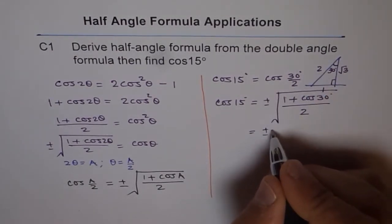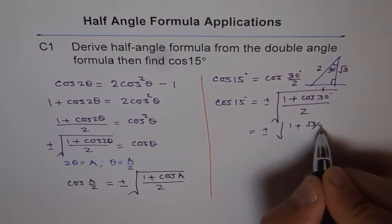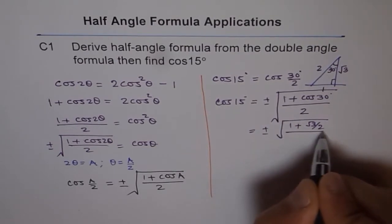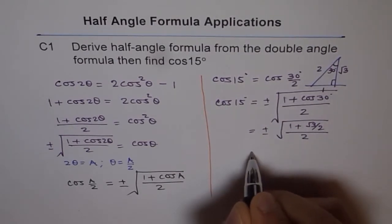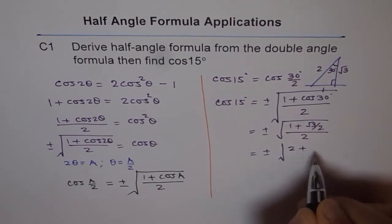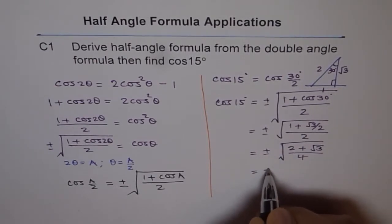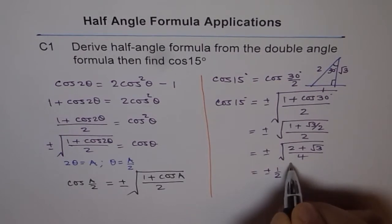So we get here √[(1 + √3/2)/2]. We can take common denominator and then say it is (2 + √3)/4. This could be written as ±(1/2)√(2 + √3).